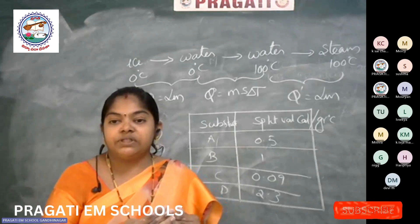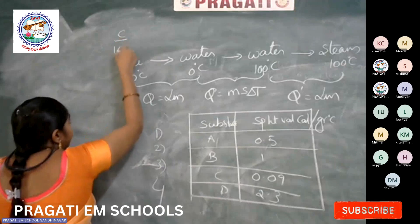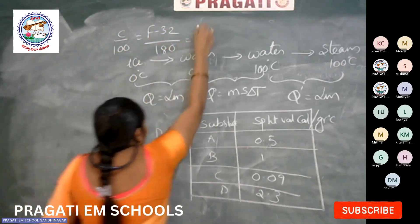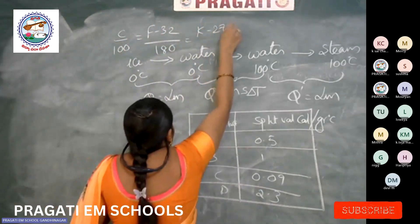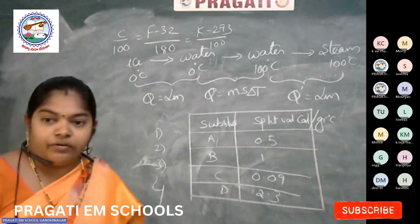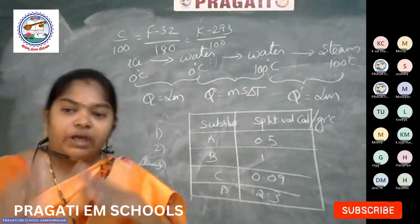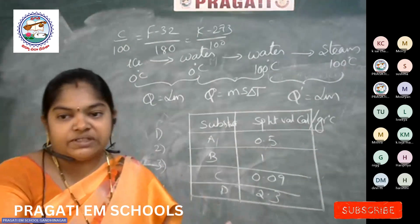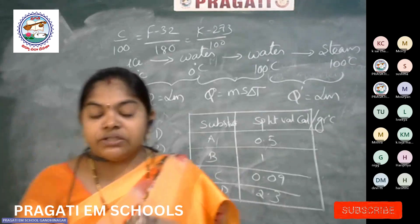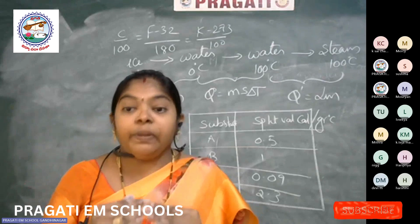If you remember the temperature conversion formula C/100 = (F−32)/180 = (K−273)/100, you can convert Celsius to Fahrenheit, Fahrenheit to Kelvin, and Kelvin to Celsius. Next, coming to the second lesson: Refraction of Light at Plane Surfaces.